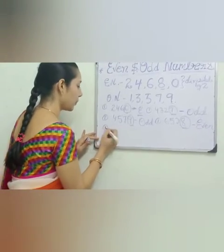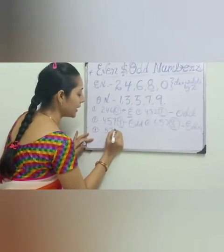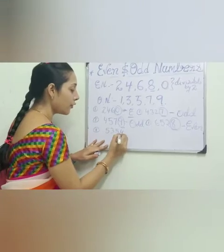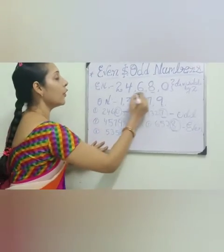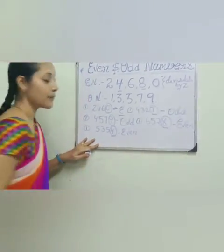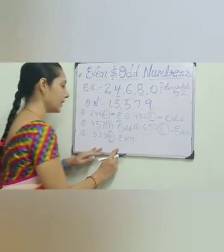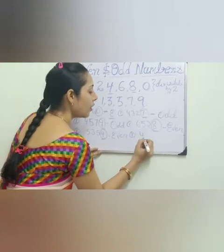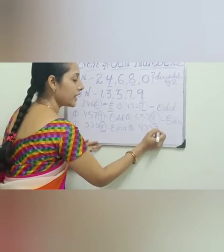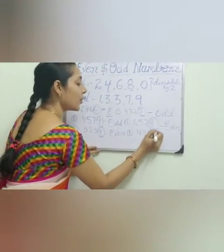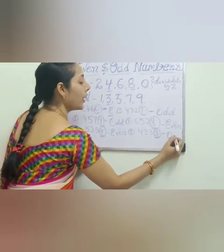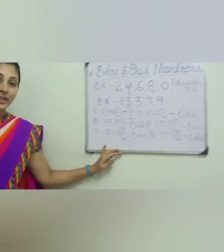One more example. The number is 5, 3, 5, 4 — or 6. The ones place digit is 4. So it is an even number. Next, the number is 4, 3, 3, 3. What is this number? The ones place is 3. So this is called an odd number. The ones place is 3 — odd number.